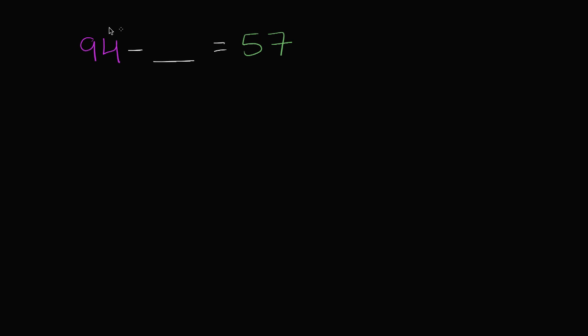So this is saying, what do I have to subtract from 94 to get to 57? Well, I could do it in a similar way. I'm subtracting this time, where I could keep subtracting numbers that make the math easy in my head until I get to 57. And this is actually how I would do it in my head. I would start at 94. And then I would subtract four to get to 90. So that's 90 right over there.